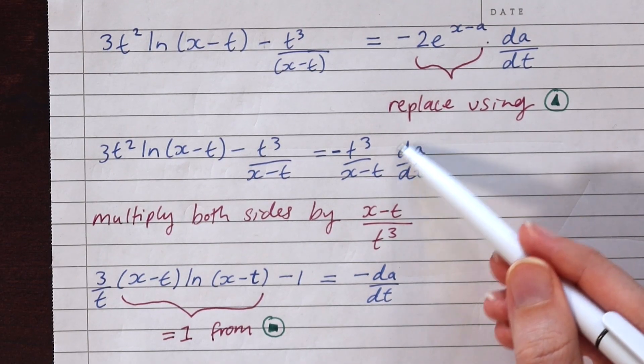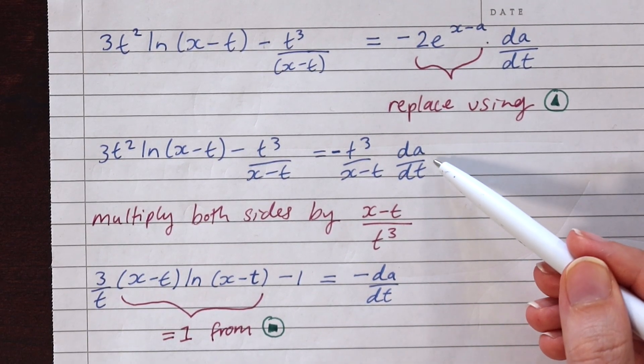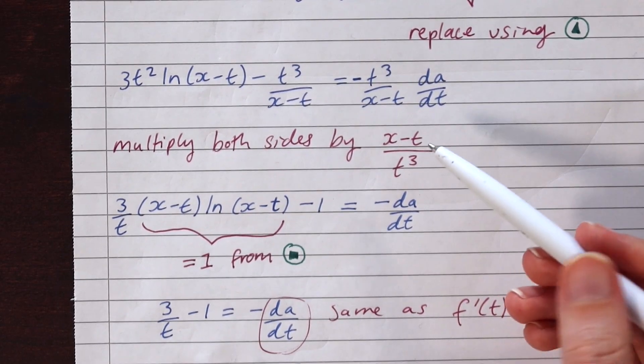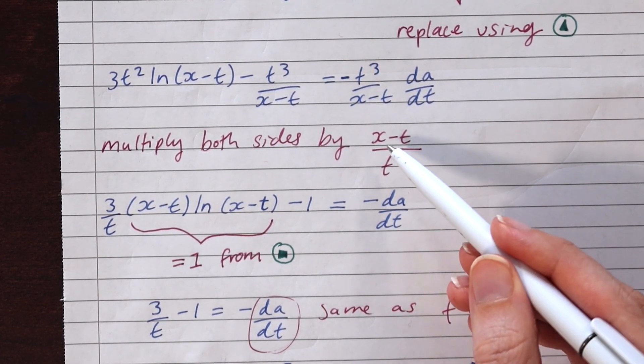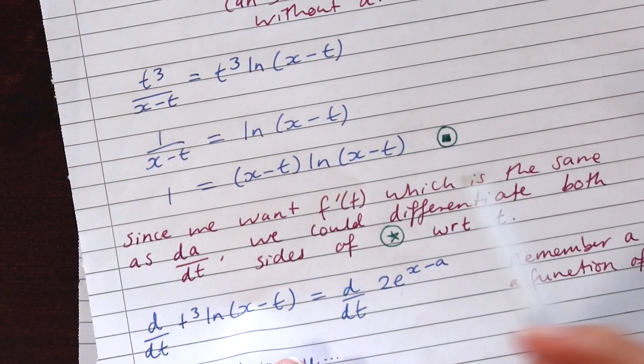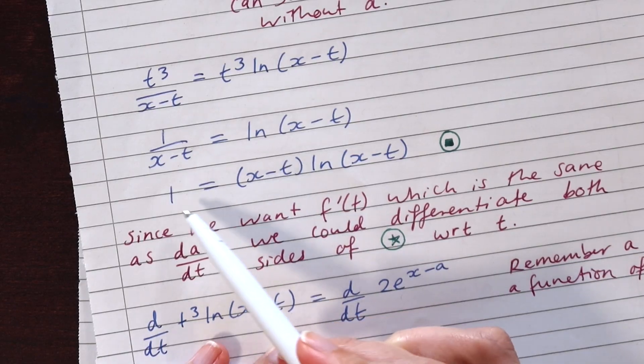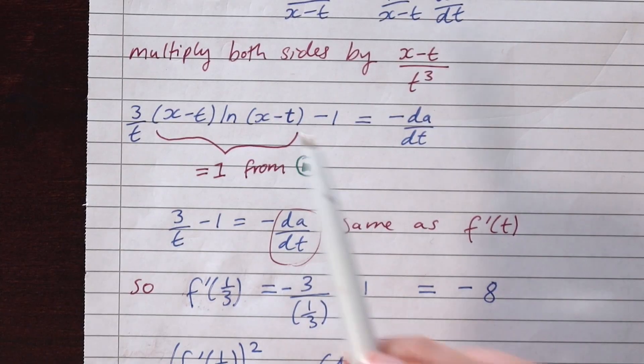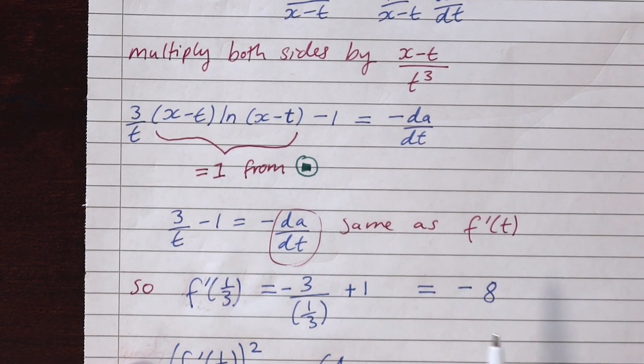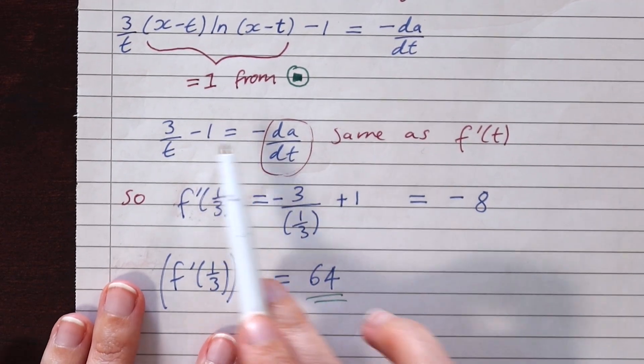Now really, we want to get da/dt by itself, since that's what we're interested in. We can get rid of some of these terms by multiplying both sides by (x - t) over t cubed. And also remembering that earlier, we found that all this was merely equal to one, because that crops up right here, we'll set that equal to one, that simplifies things down quite a bit.